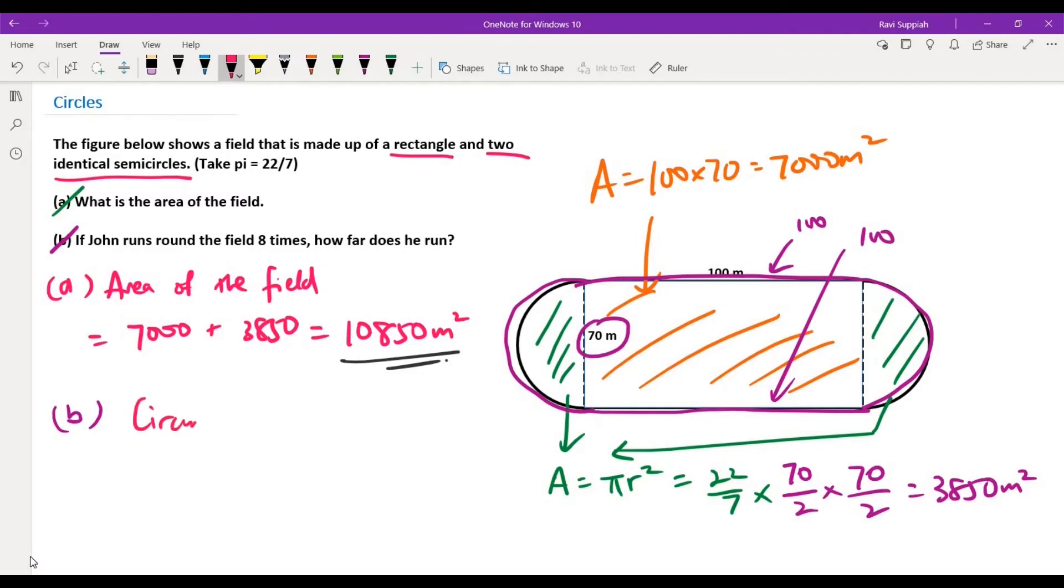The circumference of the complete circle will be given as 2 pi r, or also given as pi d. So that will be 22 over 7 times 70. And that will give us 220 meters.